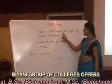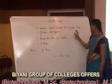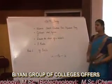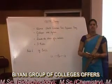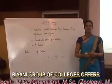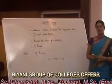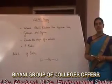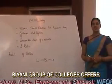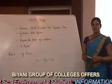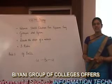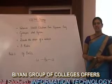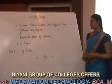VSEPR theory — Valence Shell Electron Pair Repulsion theory. This theory was given by Gillespie and Nyholm to decide the shape of a molecule. This theory is based upon the interaction of electron pairs in the valence shell of the central atom.